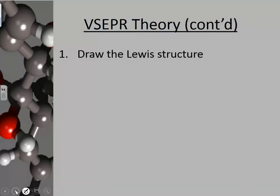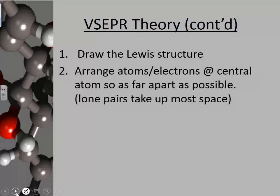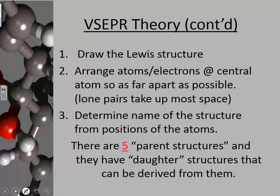When you're trying to determine your VSEPR shape, you first have to draw your Lewis structure — that's the key, drawing the Lewis structure correctly. Make sure you arrange your atoms or electrons around the central atom so they're as far apart as possible, remembering that your lone pairs take up the most space. Finally, you're going to determine the name of the structure from the positions of the atoms. There are five parent structures that we're going to look at, and then what I call daughter structures that can be derived from them.